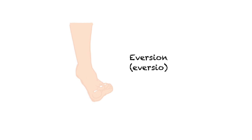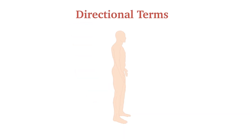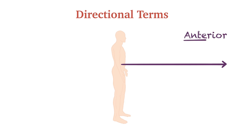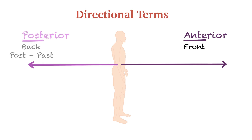Directional terms describe relative locations of different body structures. Anterior or ventral is generally used to describe the front position; it also defines direction toward the front of the body. For example, the kneecap is located anterior to the leg, and the abdomen is located anterior to the back. A term synonymous with anterior is ventral — in Latin, ventral means belly, so ventral means on the side of the belly. Posterior or dorsal describes the back or direction toward the back of the body, generally used for structures located at the back. For example, the shoulder blade is located posteriorly.